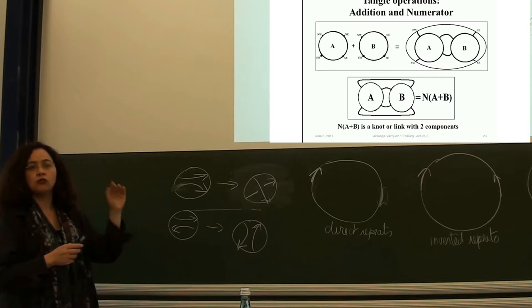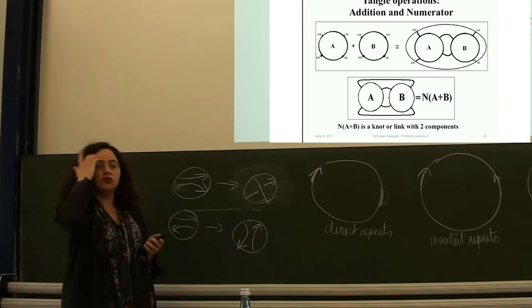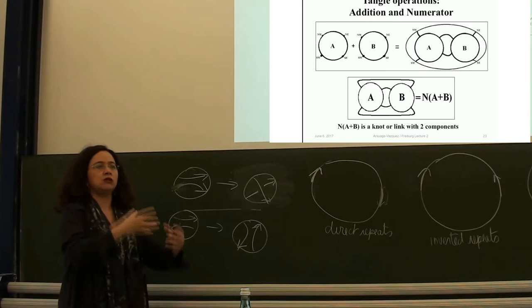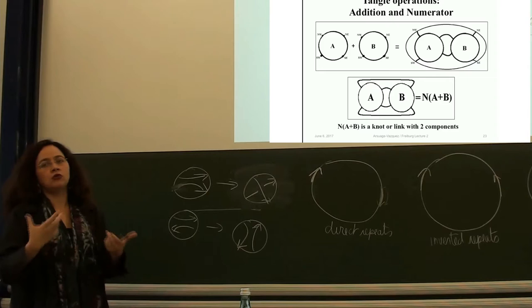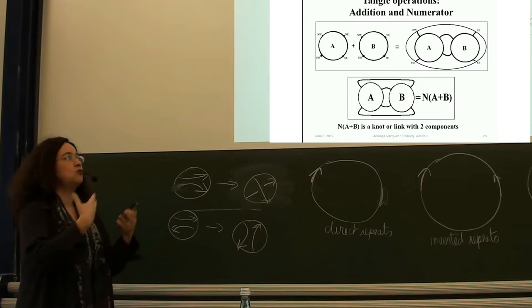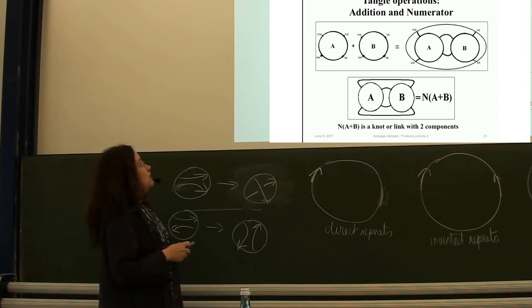The knots that appear in biology are related to rational tangles and rational knots, and can be represented by integer entry vectors and by rational numbers. That will lead us to be able to do tangle calculus and solve systems of equations where the unknowns are tangles — where the unknowns are topological objects.